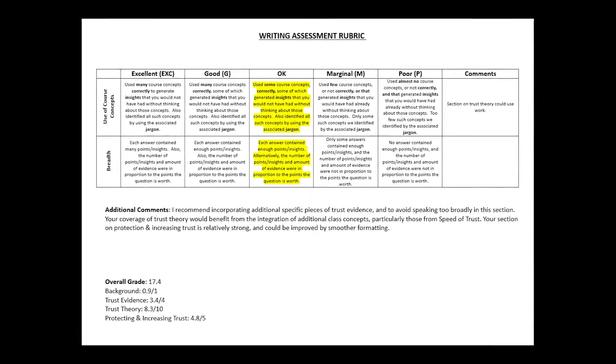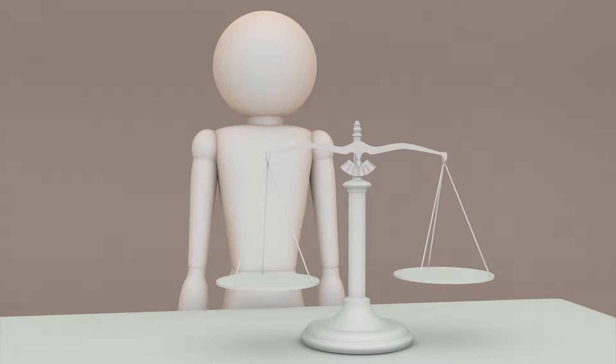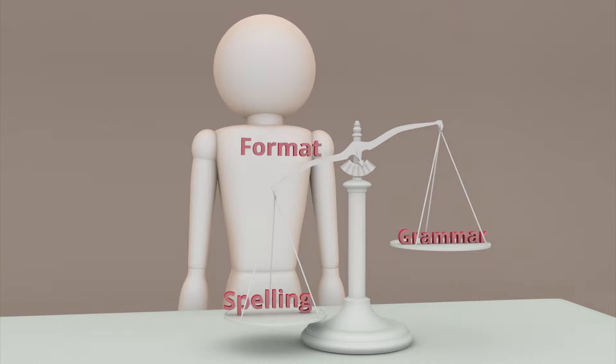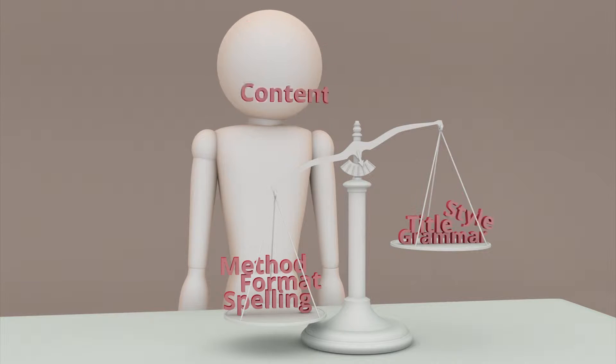The other thing that the rubric does is it convinces students that you're grading consistently, which is important to their belief that you're grading fairly, which is important to them being motivated. If they believe that you grade unfairly, if they don't understand what you're looking for and they think it's inconsistent, they think it's a crapshoot, then they won't believe anything they do matters — so why try?